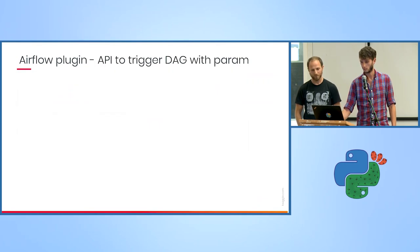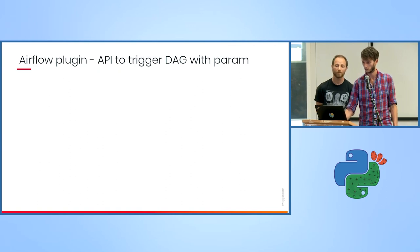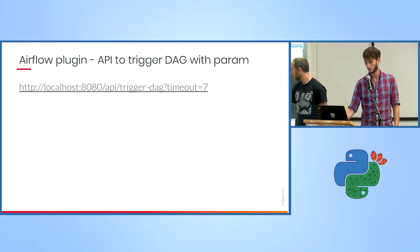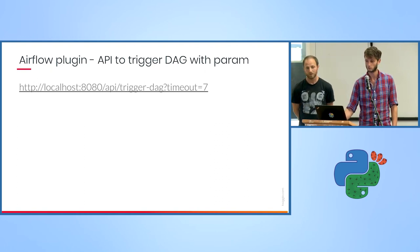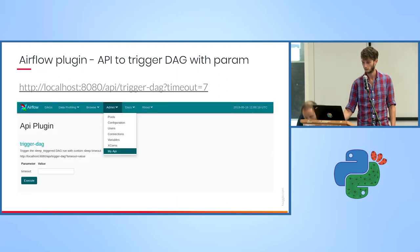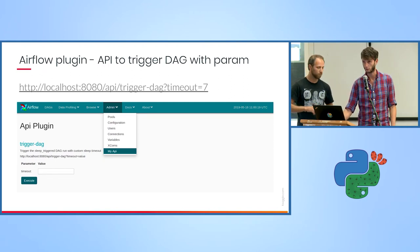Now let's say one of our customers wants to trigger our workflow that we just built — and they want an HTTP API, and they want to set the timeout themselves. Maybe something that looks like this: trigger DAG with a 7-second timeout in the parameter. And we may want an Airflow UI for ourselves as well, just to work with it.